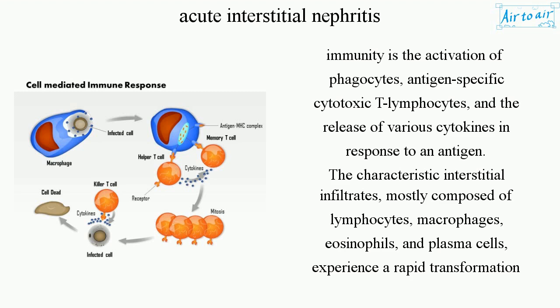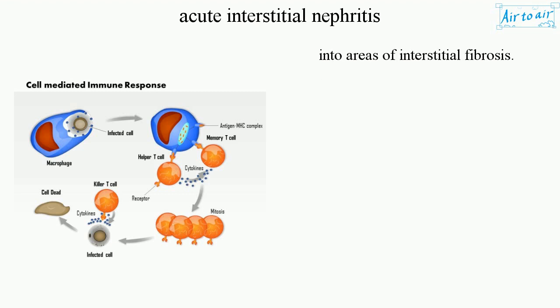The characteristic interstitial infiltrates, mostly composed of lymphocytes, macrophages, eosinophils, and plasma cells, undergo a rapid transformation into areas of interstitial fibrosis.